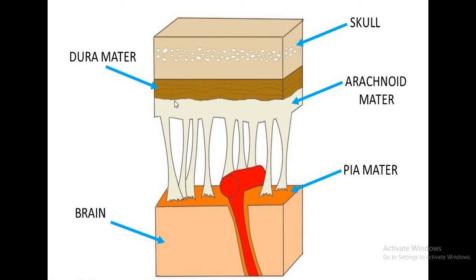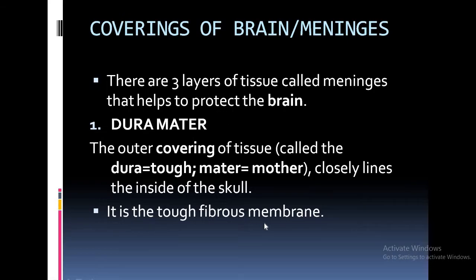Here is a simplified diagram. This is the skull, and just beneath it is the dura mater. Then the web-like or network-like structure, which is the arachnoid mater. And the innermost layer is the pia mater, which is richly supplied with blood vessels and is in direct contact with the brain.